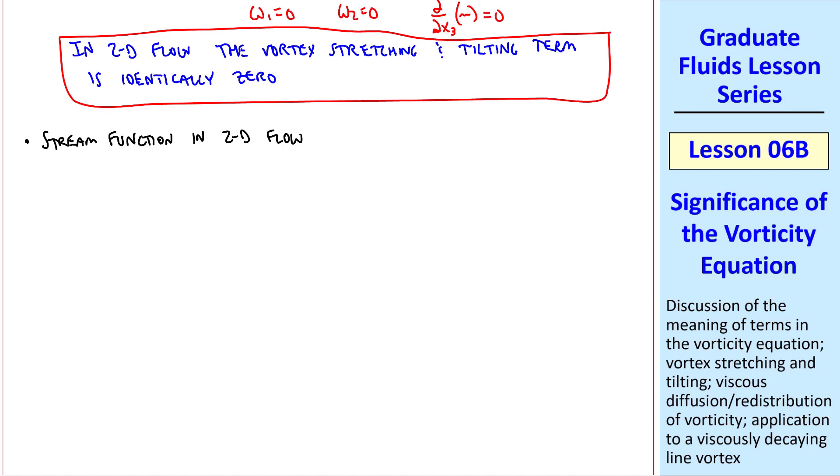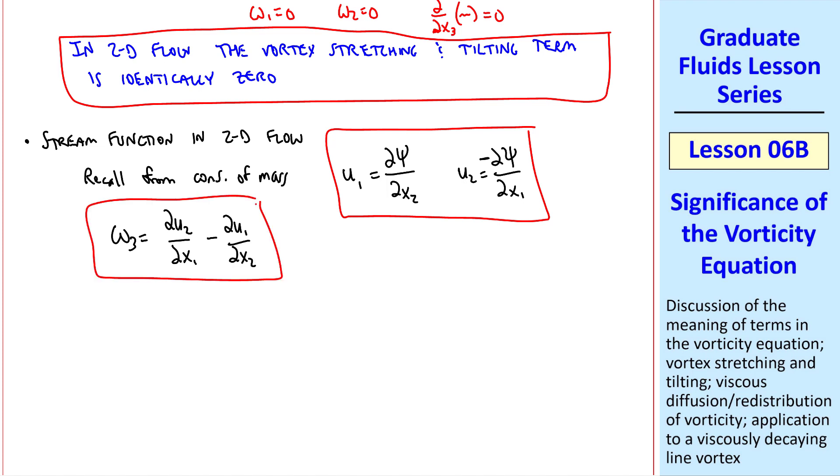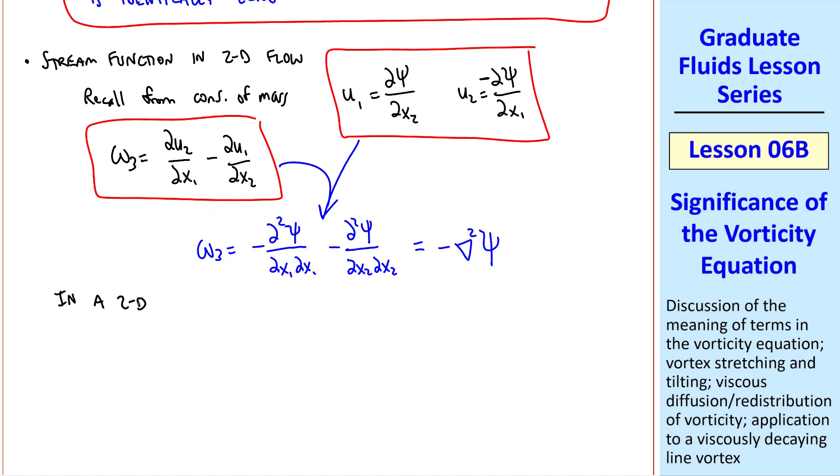Finally, let's consider the stream function, again in a 2D flow. We recall from conservation of mass, we defined the stream function for incompressible flow in the X1, X2 plane, as U1 equals del Psi del X2 and U2 equals del Psi del X1 with a negative sign. This is the definition of the stream function. We also know that omega 3 is del U2 del X1 minus del U1 del X2 by its definition, where omega is the curl of the velocity vector. Combining these two equations, omega 3 is negative del squared Psi del X1 del X1 minus del squared Psi del X2 del X2, which we recognize as negative of the Laplacian of Psi in two dimensions.